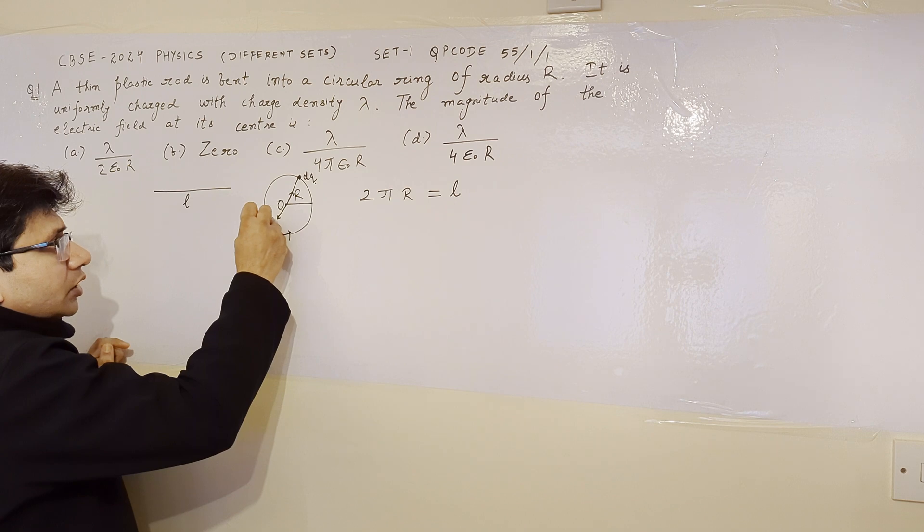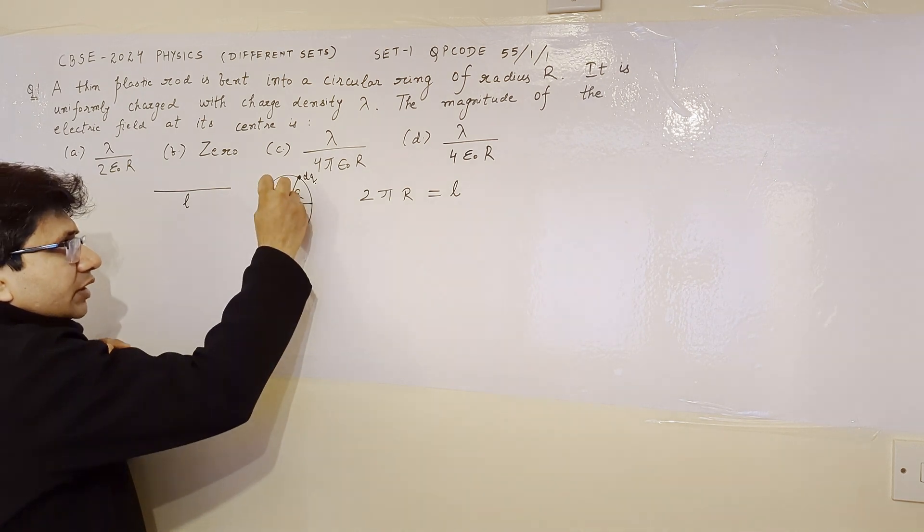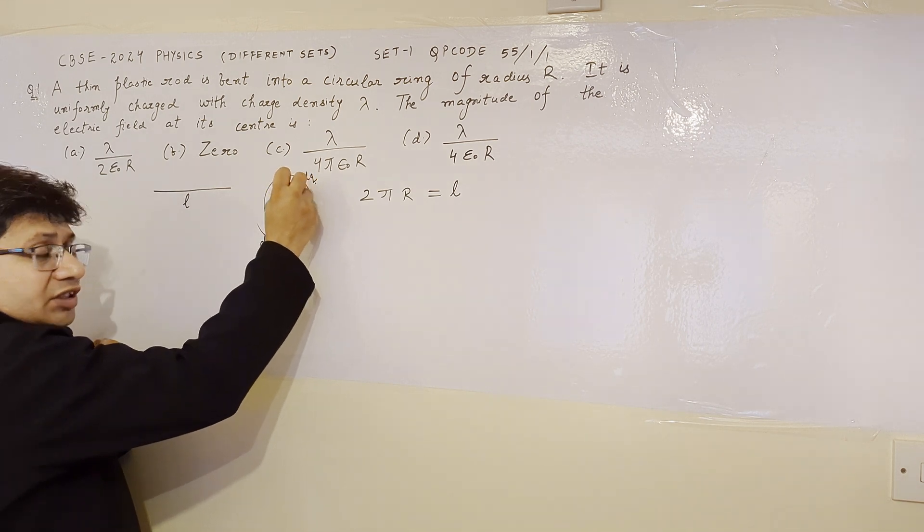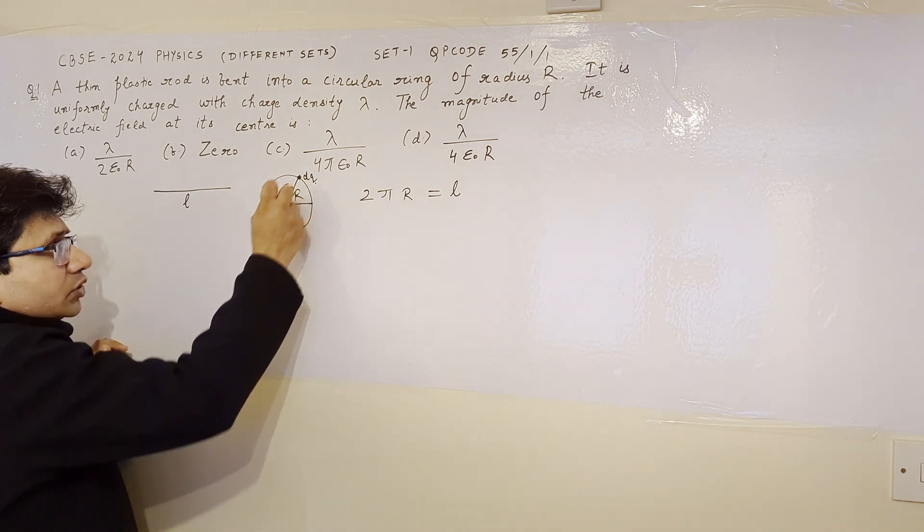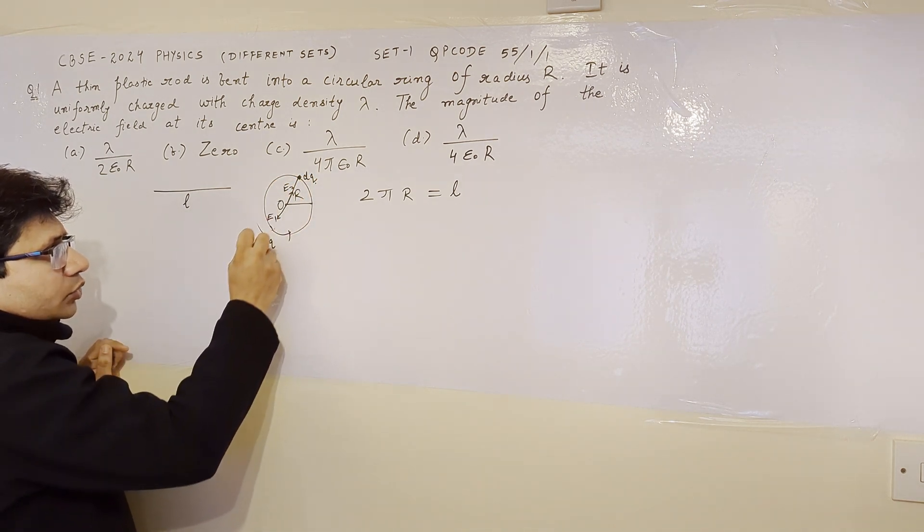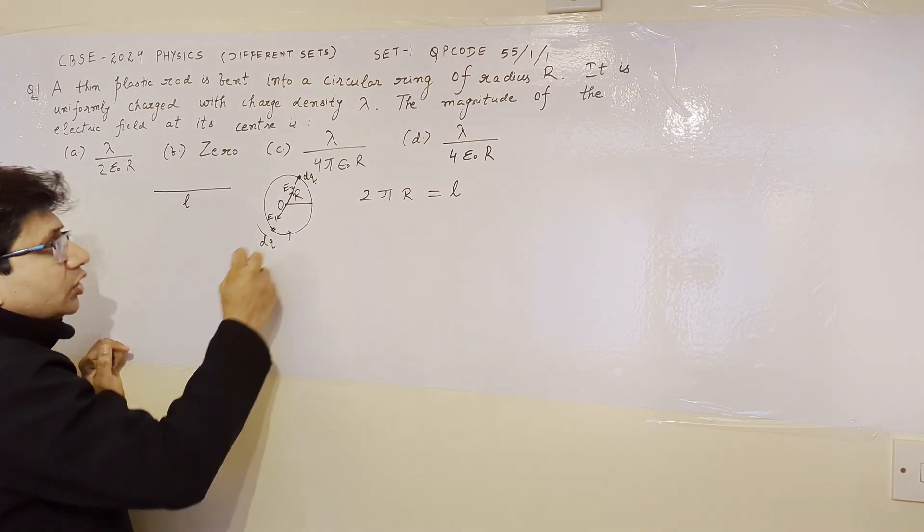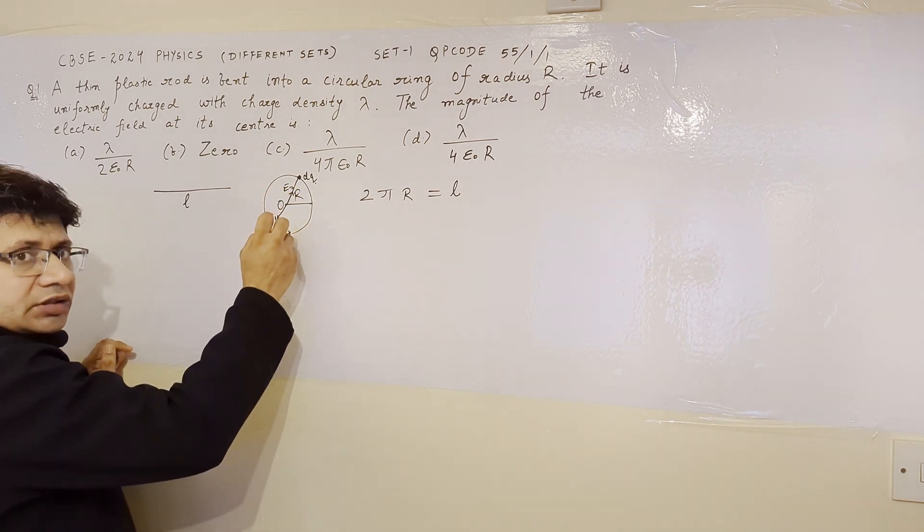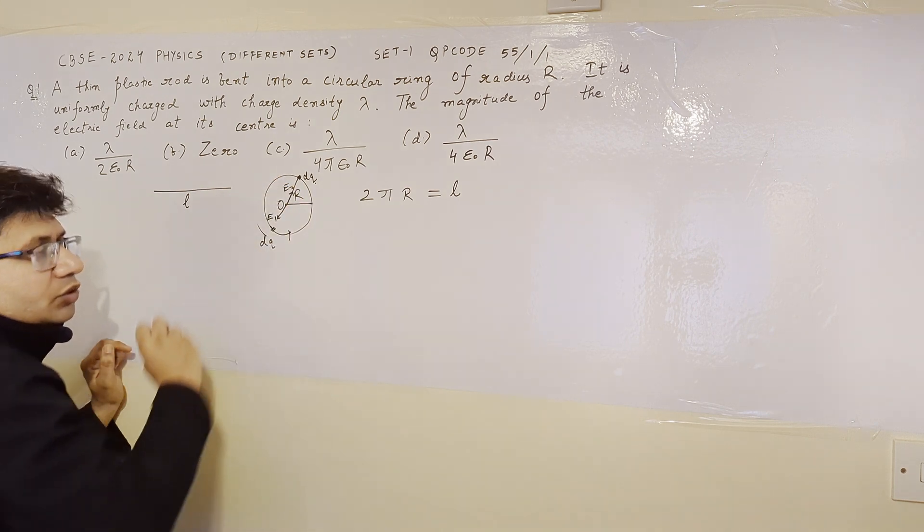For example, we can call this field as E1 and this field as E2. E1 is the field due to this particular small segment dq, and E2 is the electric field at the center due to this particular small segment dq. So due to the equal magnitude but opposite direction, E1 and E2 cancel out each other.